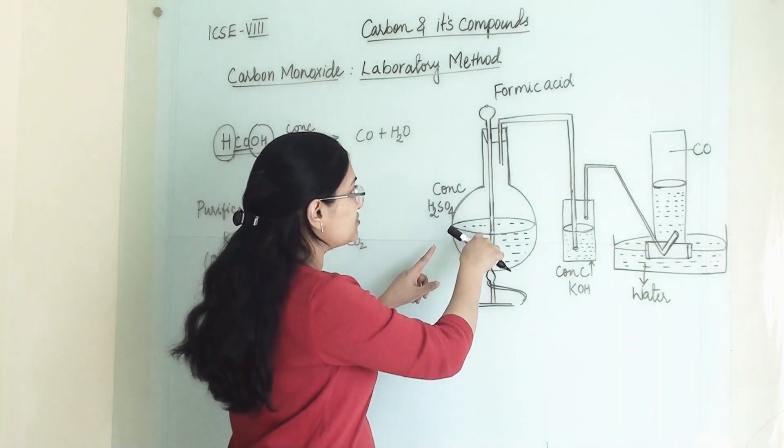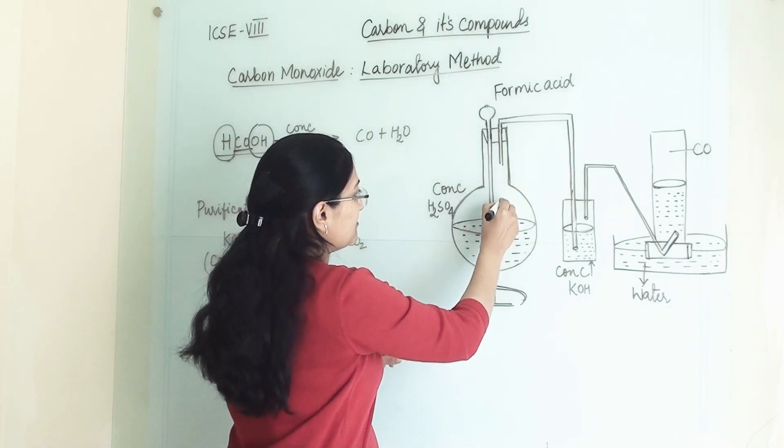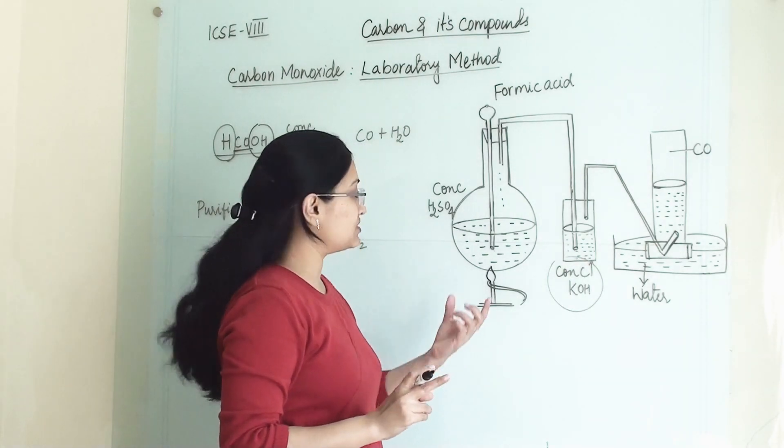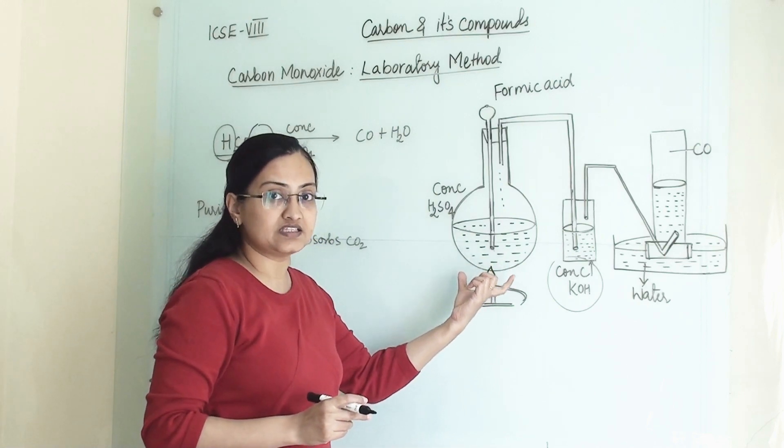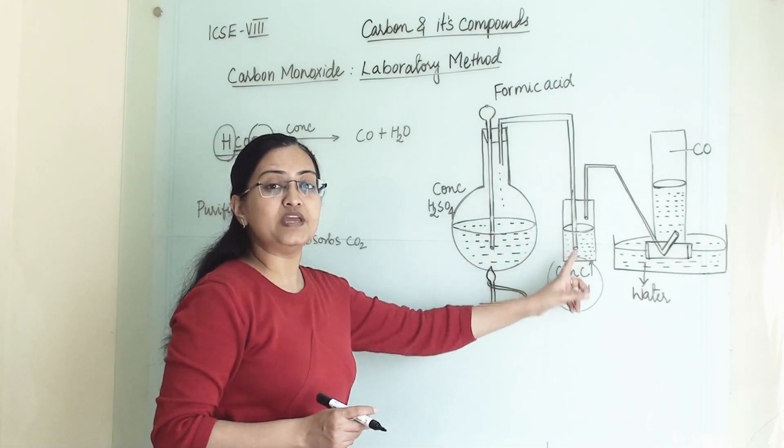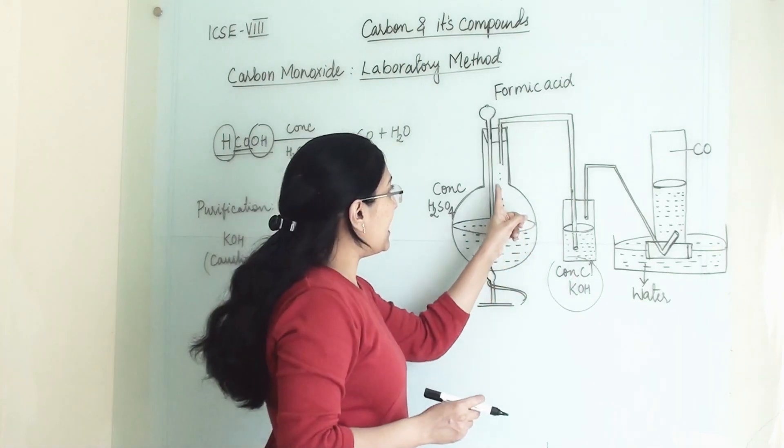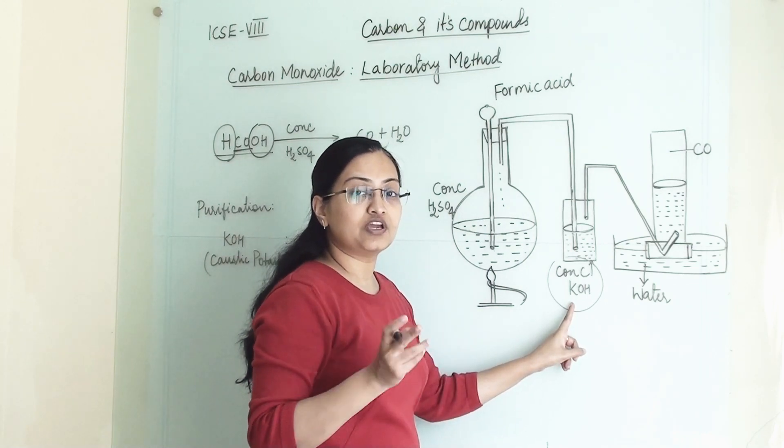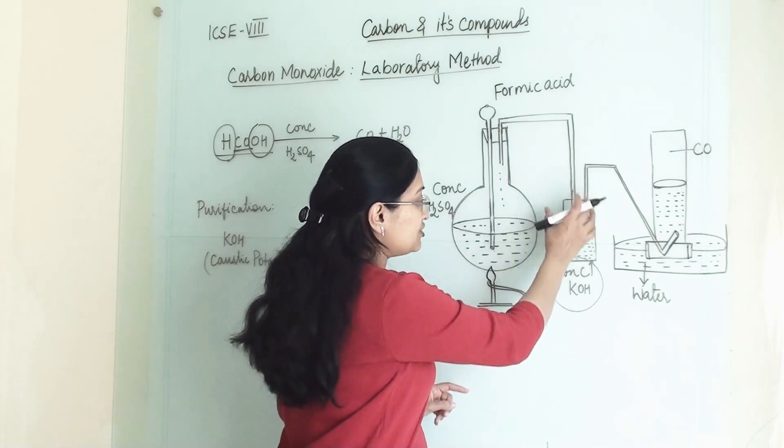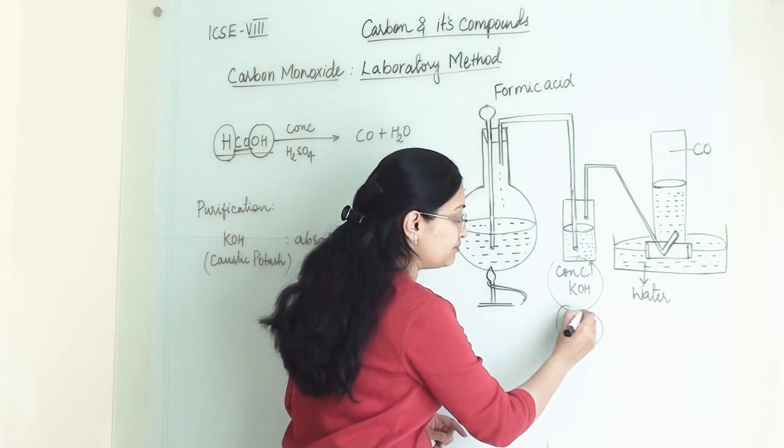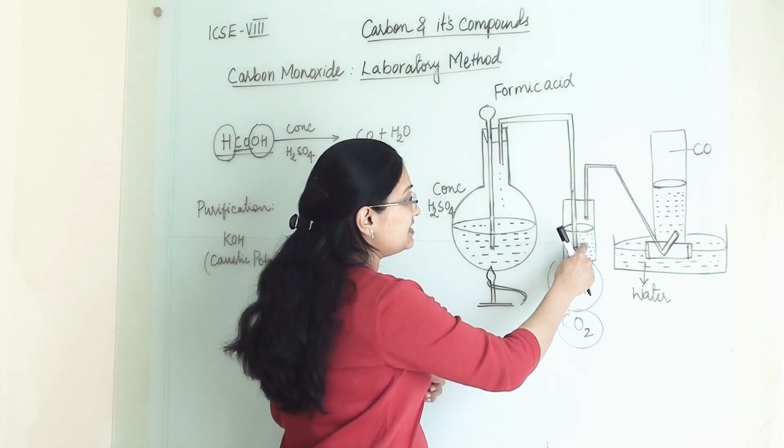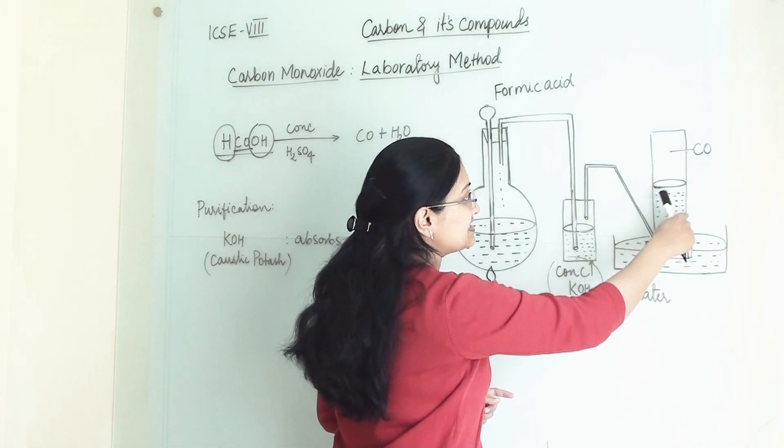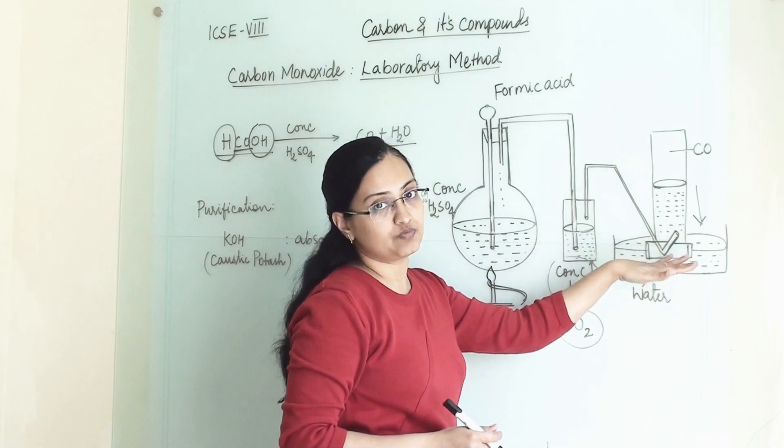So here when they are reacting together, this gas whatever is generated first we are passing it through caustic potash or potassium hydroxide. Why? Because if in case any carbon dioxide gas has been generated in this, that has to be eliminated. So we are adding this gas delivery tube to concentrated KOH, that is caustic potash or we can also say potassium hydroxide. So it will absorb whatever carbon dioxide impurity will be there, and again whatever carbon monoxide gas will be there will go to this water bath. And we are collecting carbon monoxide gas by downward displacement of water.